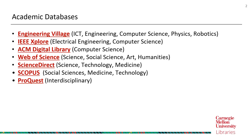The third one is the ACM Digital Library. ACM stands for Association for Computing Machinery, so it's a database mainly about computer science. The next one is the Web of Science academic database, which covers science, social science, arts, and humanities subject areas.